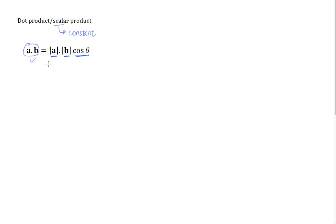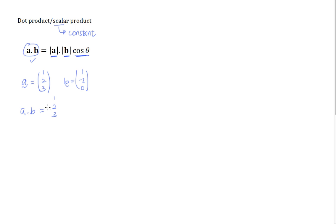How do we compute A dot B? The dot product is actually quite easy. If I have a vector A that goes like 1, 2, 3, and a vector B that goes like 1, negative 2, and 0, then when I have A dot B — which means the dot product — it means I'll have [1, 2, 3] dot with [1, negative 2, 0].